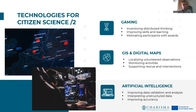Other complementary sources of data and tools include gaming or incentivizing distributed thinking, improving skills and learning, motivating participants with awards, and making it fun. Other technologies include GIS — geographic information systems — and digital maps, which are useful for localizing voluntary observations, monitoring activities, and supporting interventions. Finally, artificial intelligence can improve data validation and analysis, and is also used for interpreting crowdsourced data and improving the accuracy of voluntary information.